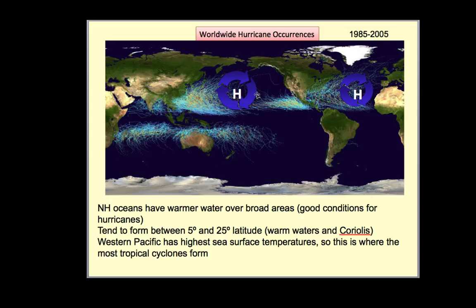Semi-permanent high pressures that live over the oceans, especially during the warm season when the water is certainly warm enough to support hurricane growth, are major steerers for the tracks of these storms. A lot of the tracks go along the western side of these semi-permanent high pressure zones.